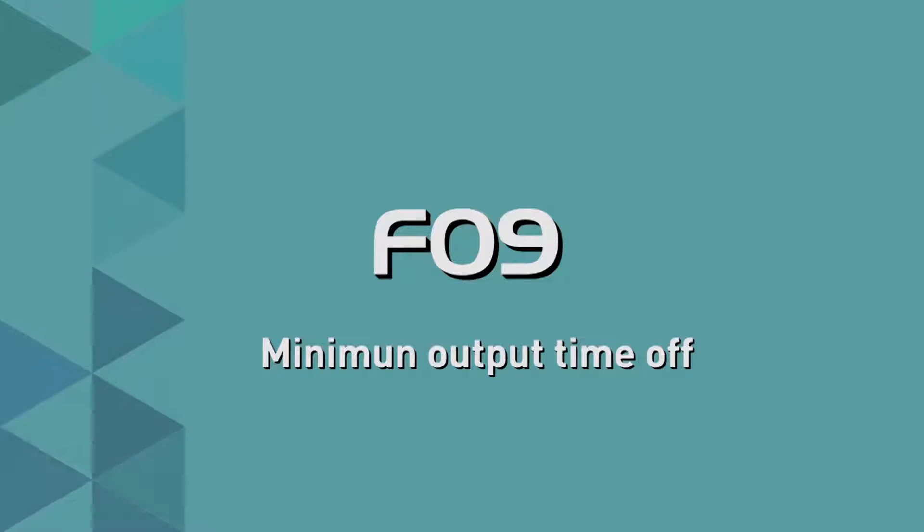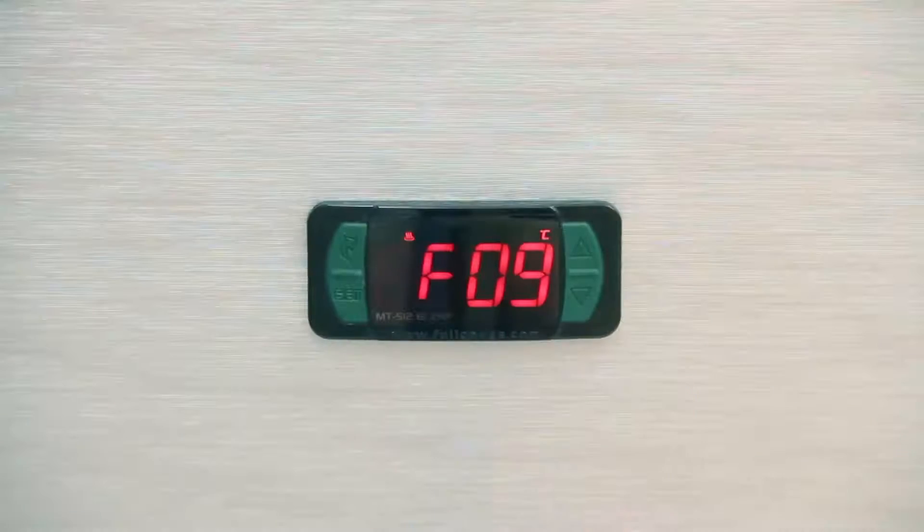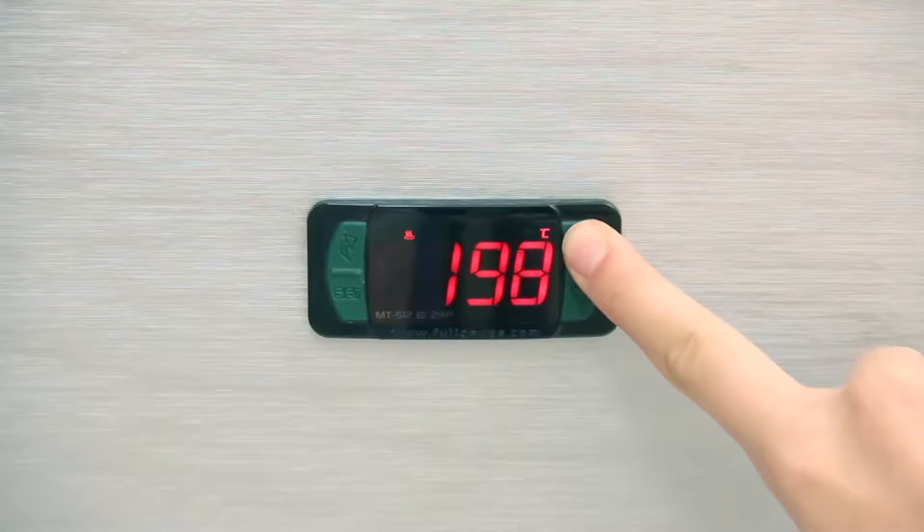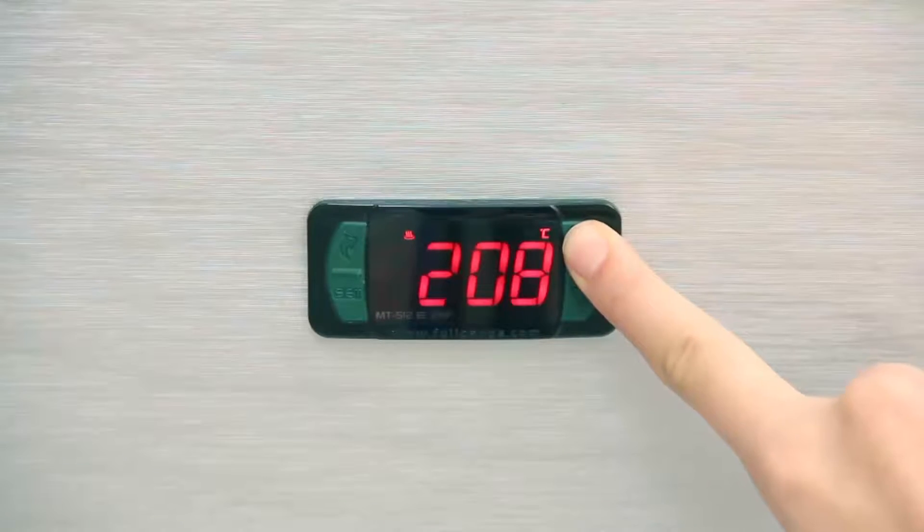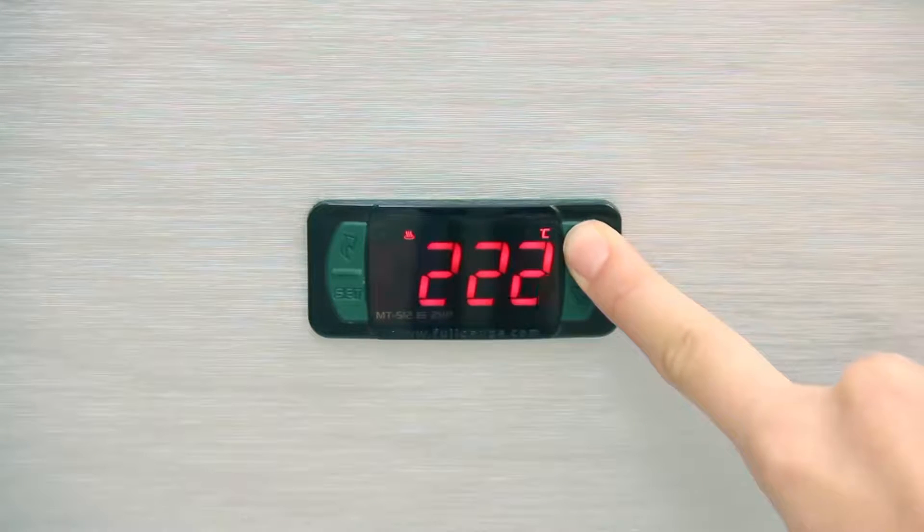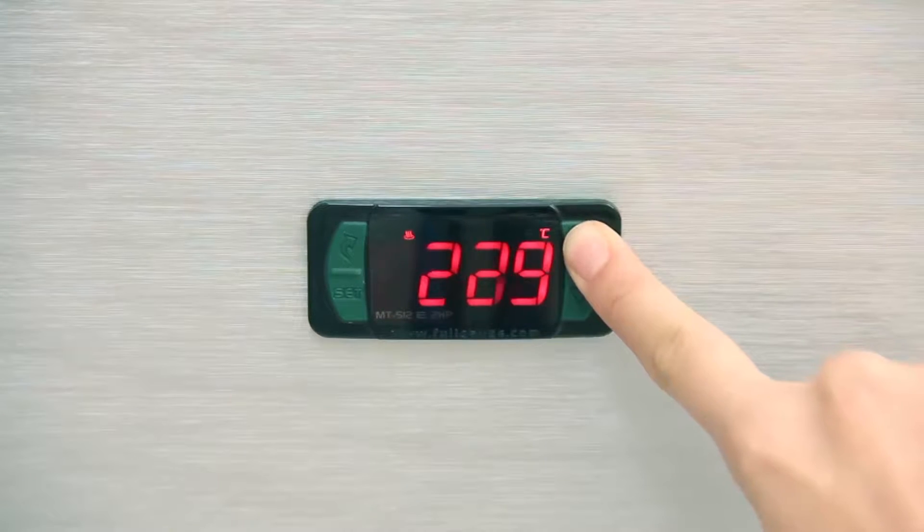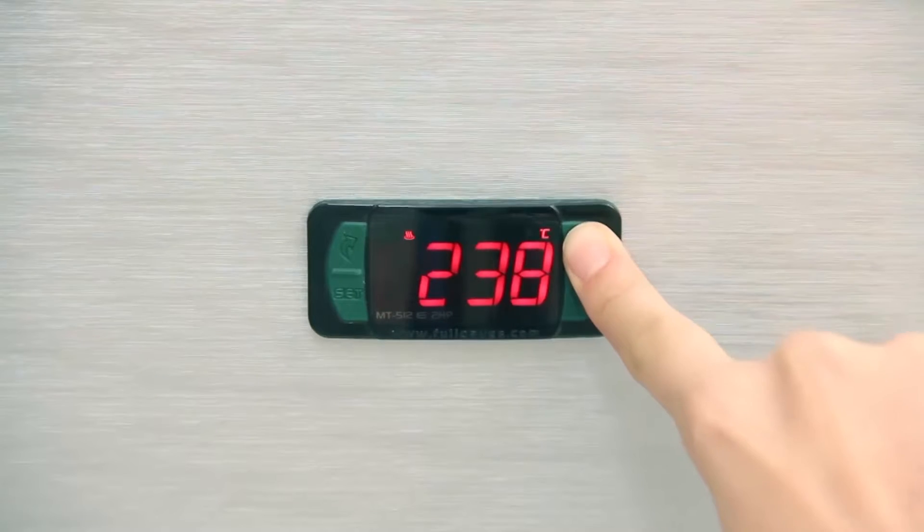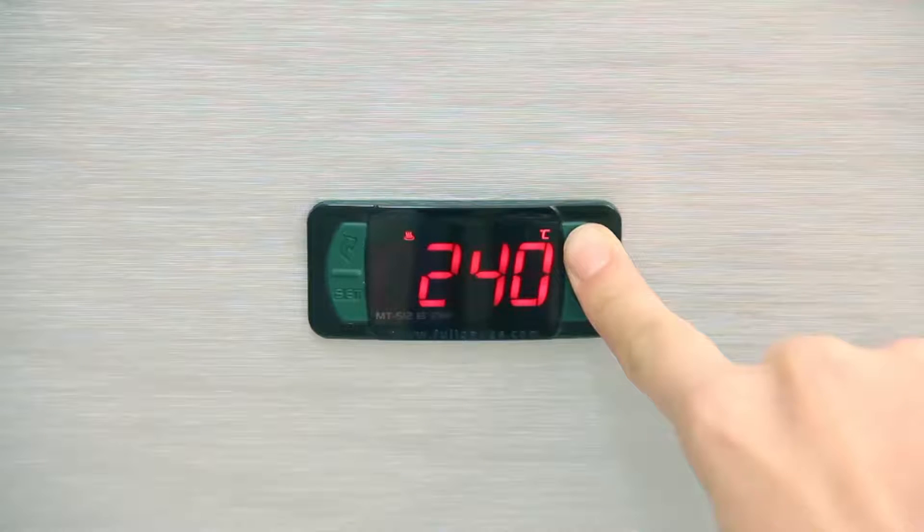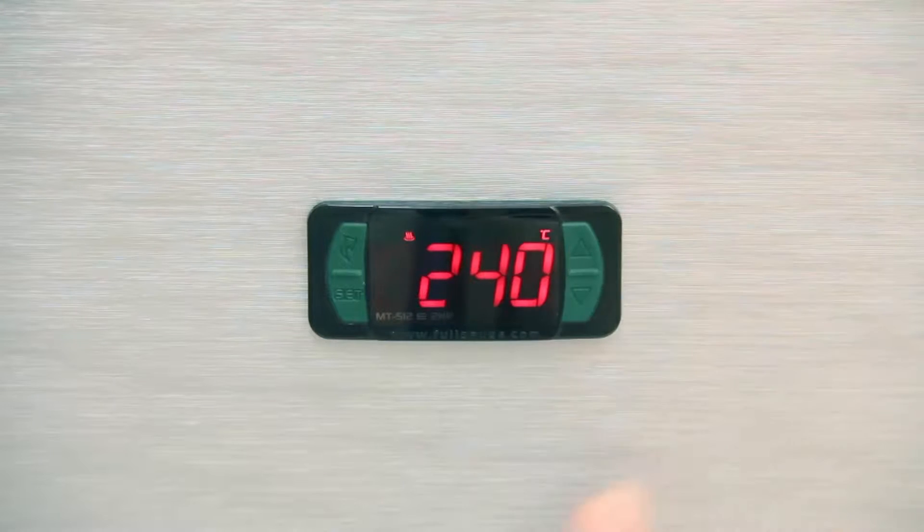F09, Minimum Output Off Time. Similar to the previous parameter, this determines the minimum relay off time since the last start. Select No, so as not to adopt a minimum time, or provide a value between 1 and 999 seconds. In the examples, we chose 240 seconds for both applications.